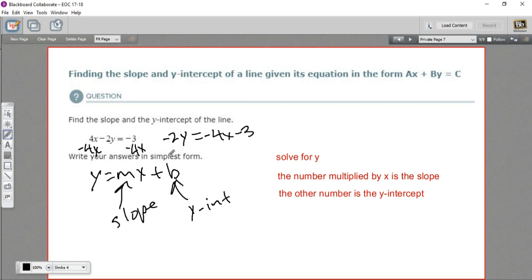Now to finish solving for y, I need to divide by a negative 2. And both terms get divided by negative 2 over here. So negative 2 divided by negative 2 is just a positive 1. That makes this just plain old y. That's what we wanted. That's what we were going for.